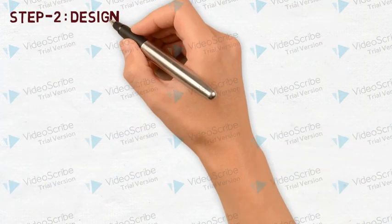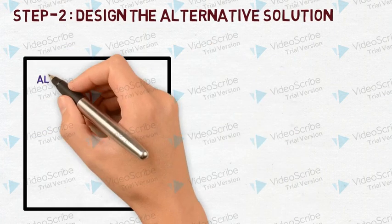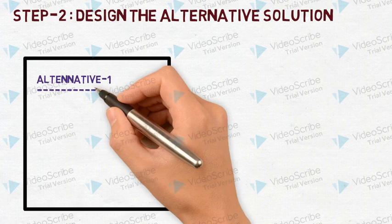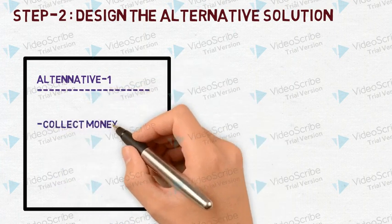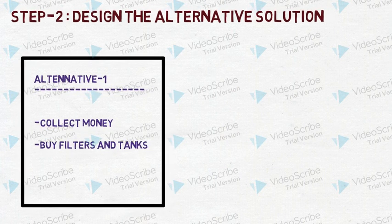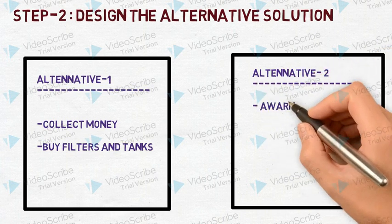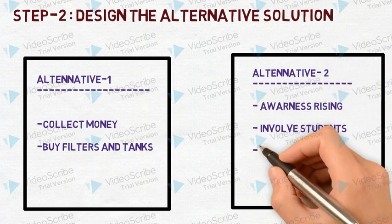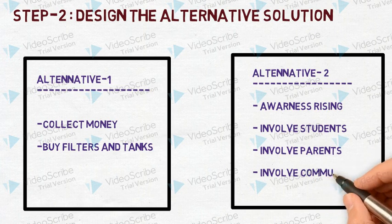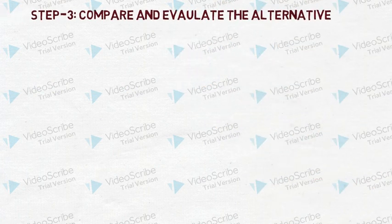In step 2, we identified two alternative solutions. The first was to collect money and buy some filters and tanks for the school. The second was to work collectively through awareness-raising and involve all teachers, students, parents, and the community in solving the problem.